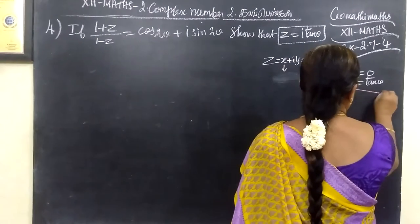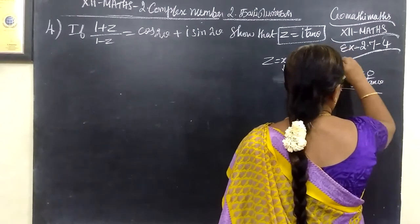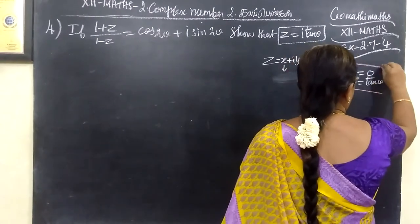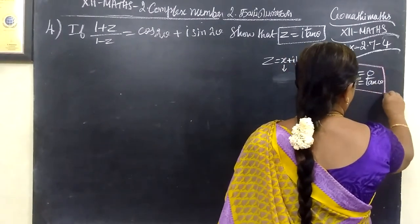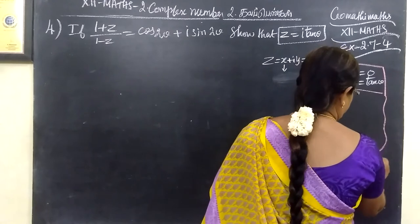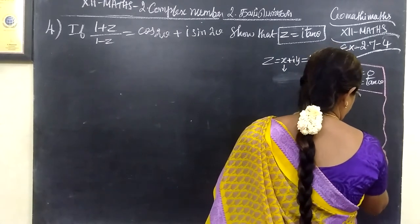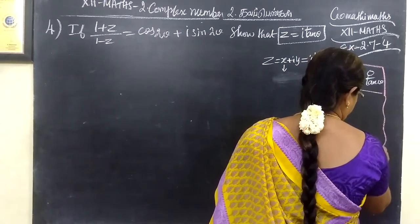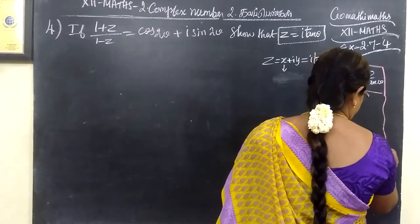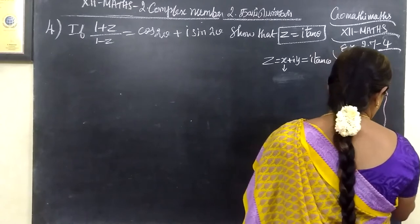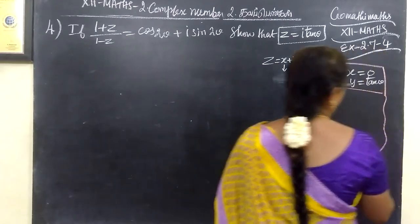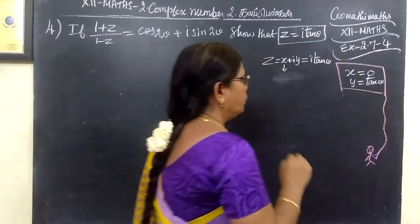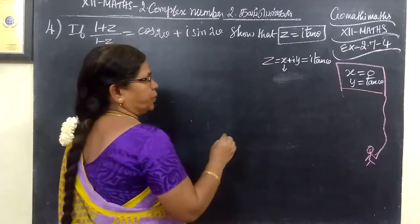Here we are proving x equals 0 and y equals tan θ. Now let's prove y equals tan θ.